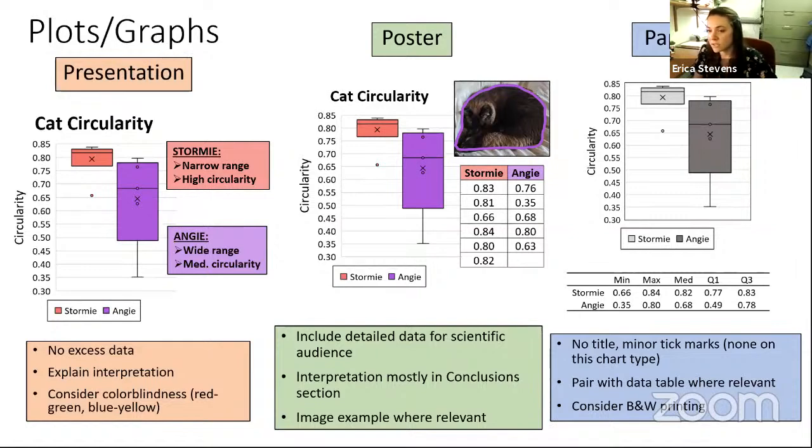For posters, include that detailed data for a scientific audience, but don't make it the main focus. So here, I included a table of the data so that someone could look at it and understand what I'm saying and see the data themselves, but it's not the main focus, the plot is. And make sure the interpretation is mostly in the conclusion section so that you're not overwhelming the person that's looking at the poster trying to understand where your figure is at. And then use imagery wherever relevant. So including that image of Angie might draw somebody's attention a little bit more than purely a plot would. And for a paper, make sure that the plot doesn't have a title and that tick marks are included. There's one in this chart type, but if you have a normal plot, then you would have some minor tick marks. And pair that with a data table where relevant, so you're not including the data as you would with a poster right next to it, but obviously add a separate table into the paper. And again, consider that black and white printing.